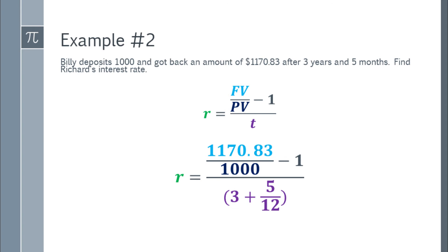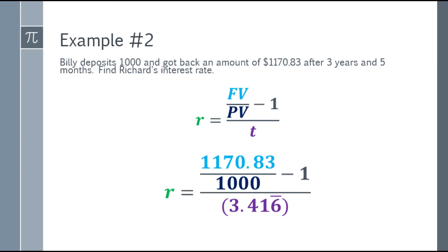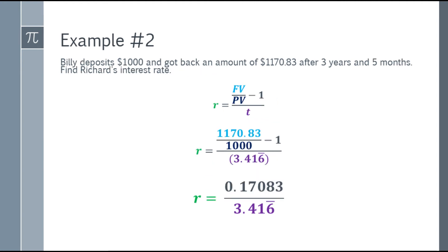We can simplify the denominator first. 5 over 12, calculate that, plus 3, the answer is 3.416 repeating decimal. That's why I have a bar above the 6. Next, simplify the numerator. 1,170.83 divided by 1,000, move the decimal and subtract 1. The answer is 0.17083.